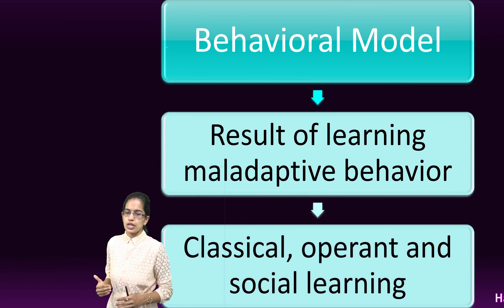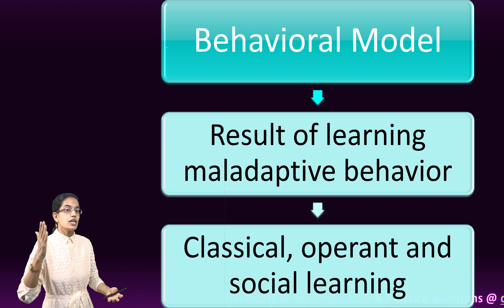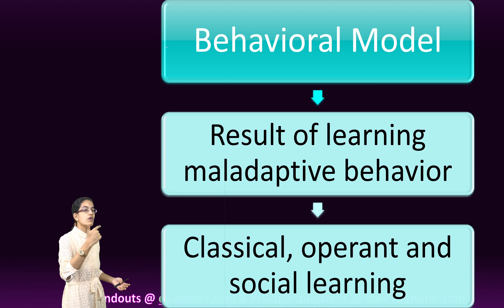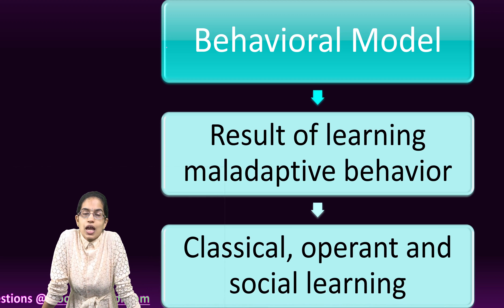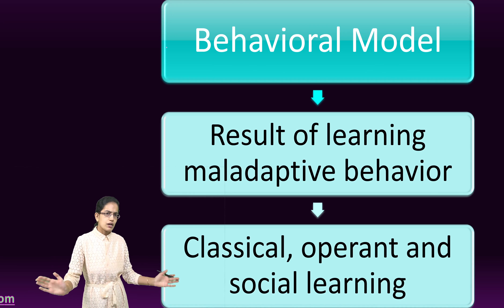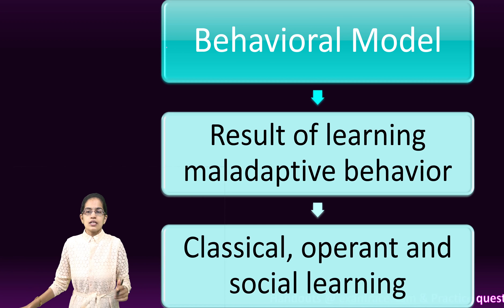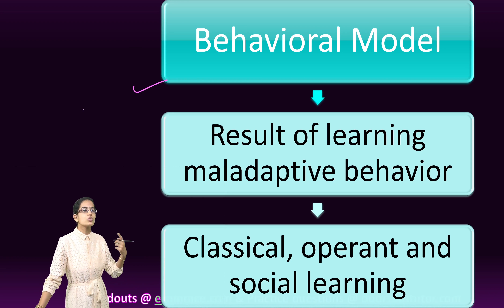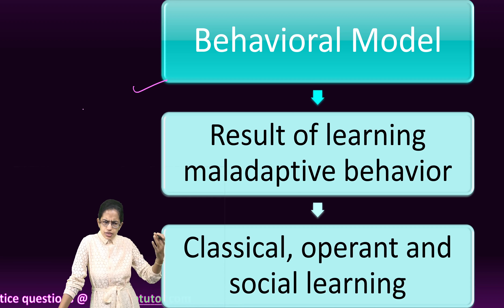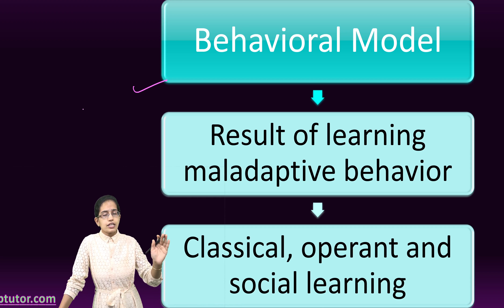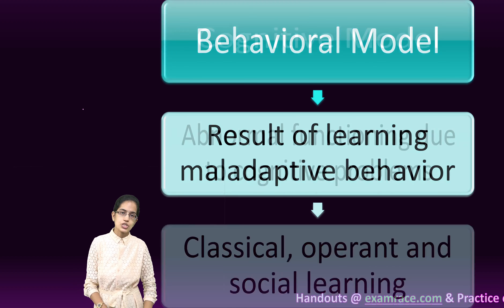The behavioral model holds that faulty actions arise from faulty learning, faulty thoughts, and faulty knowledge, generating a faulty learning pattern that leads to maladaptive behavior. This can be addressed through conditioning, modeling — imitating successful role models — and reinforcement through classical and operant conditioning.